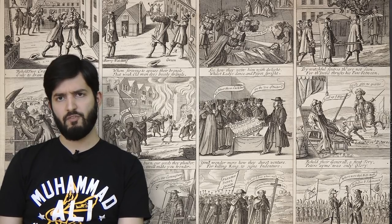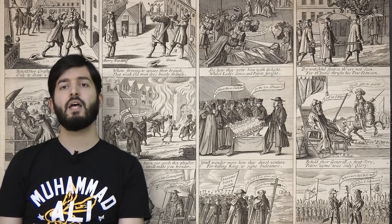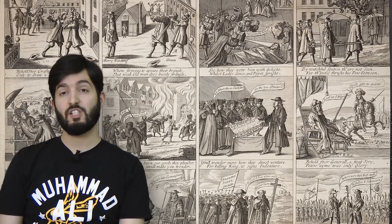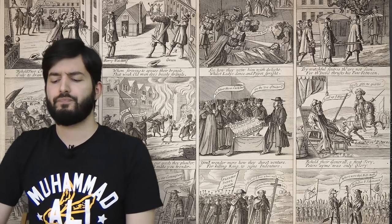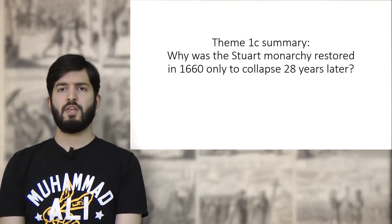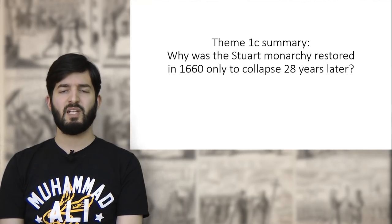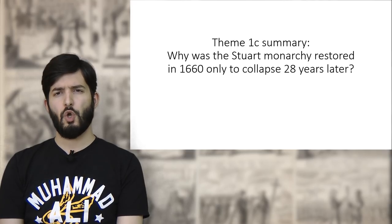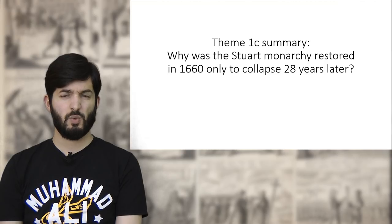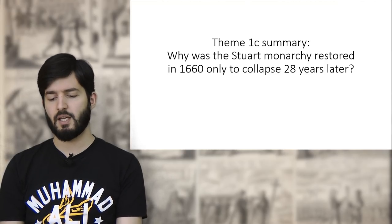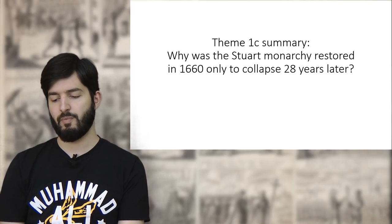With the first couple of videos we looked at the causes of political instability under Charles I. The second set looked at the reasons for the failure to find an adequate settlement during the interregnum and the eventual collapse of Republican rule. This final sub-theme looks at the causes of political instability under the restored Stuart monarchy, which also ends with the monarchy collapsing just 28 years after being restored — a second collapse of the Stuart monarchy in the space of about 70 years.